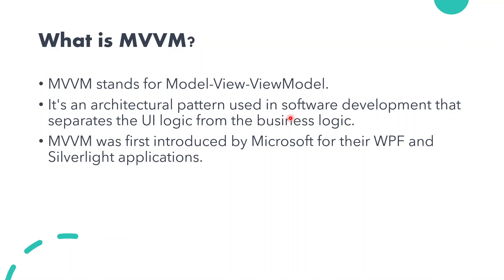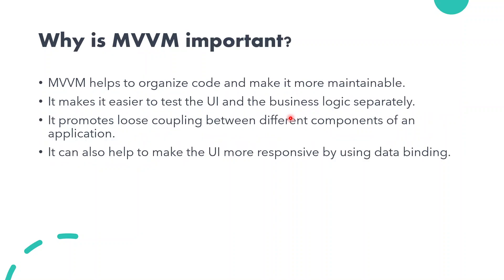MVVM is a famous architecture pattern that modern developers follow because it structures code and promotes good code methodology. Moving to why MVVM is important: MVVM helps to organize the code and make it more maintainable. When a developer leaves a project, other team members will be able to maintain and understand the code easily.